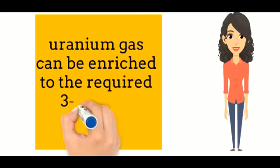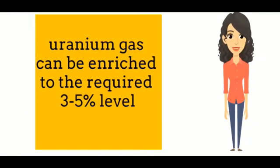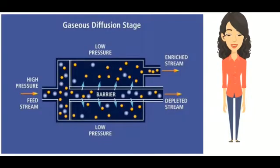By diffusion method, uranium can be enriched to 3-5%. This is the diagram of gaseous diffusion method.